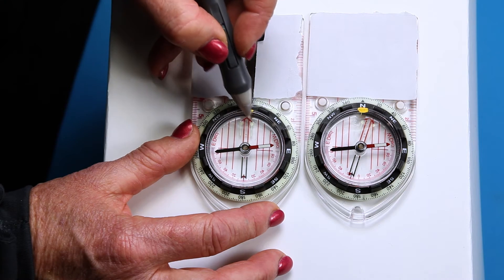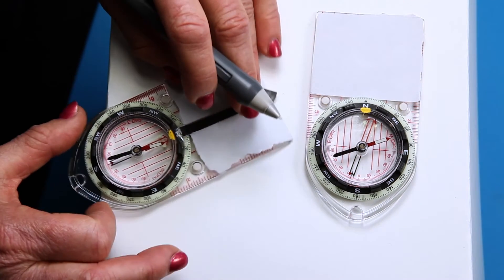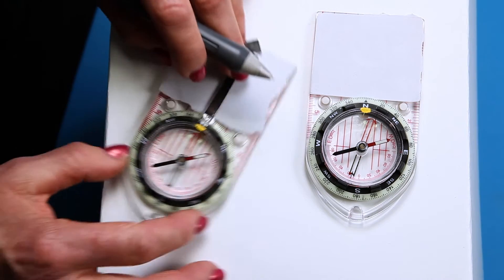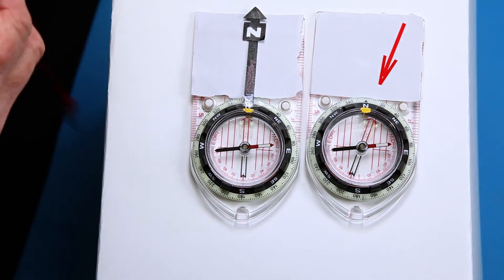This outline is called the orienting arrow. When you use the magnetic needle, you always use the orienting arrow with it. Here's how to move the orienting arrow on your compass so it looks like this. It's easy.